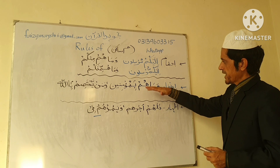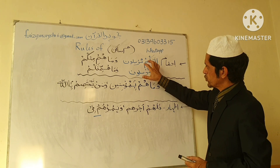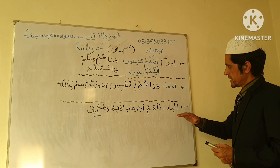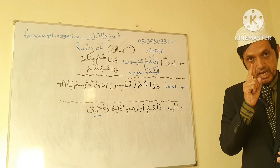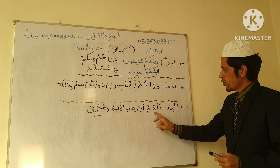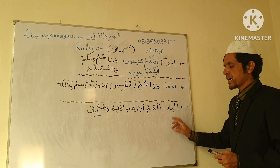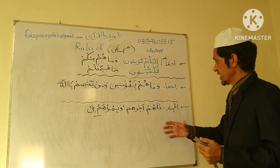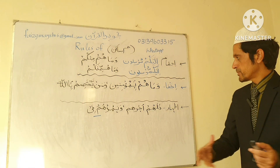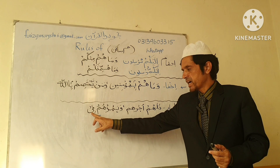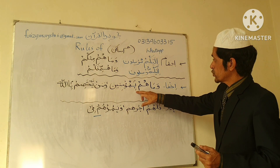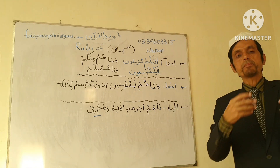After Meem Saakin, when Meem comes — Idgham. After Meem Saakin, when Ba comes — Ikhfa. Except these two letters and except Alif (which is always Saakin and cannot follow Meem Saakin), when the remaining letters come after Meem Saakin, we make Izhar. Izhar means to express — to clearly articulate. For example: 'Falahum Ajrohum' — after Meem Saakin comes Hamza, so we make Izhar and clearly pronounce the Meem.